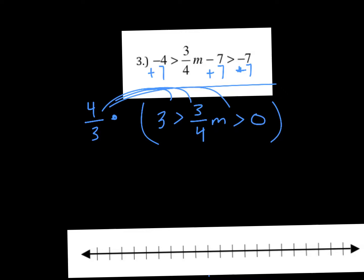So four thirds times three, you can make these into fractions if you want to by putting them all over one. So tops with tops, bottoms with bottoms. So four times three is twelve over three times one is three. So twelve divided by three is four.